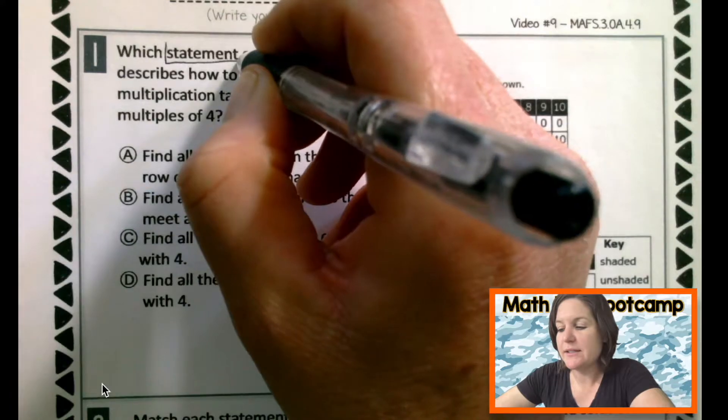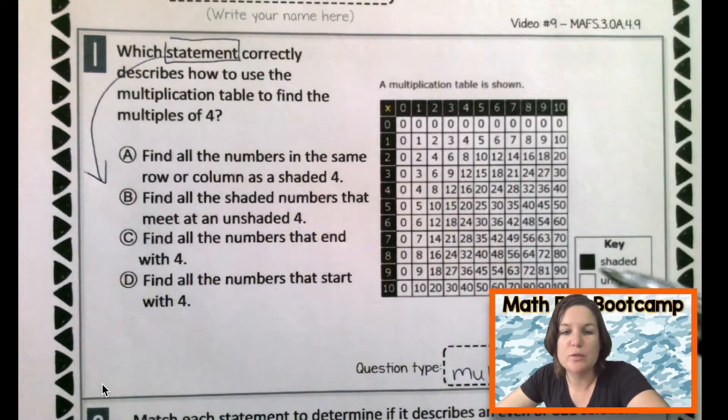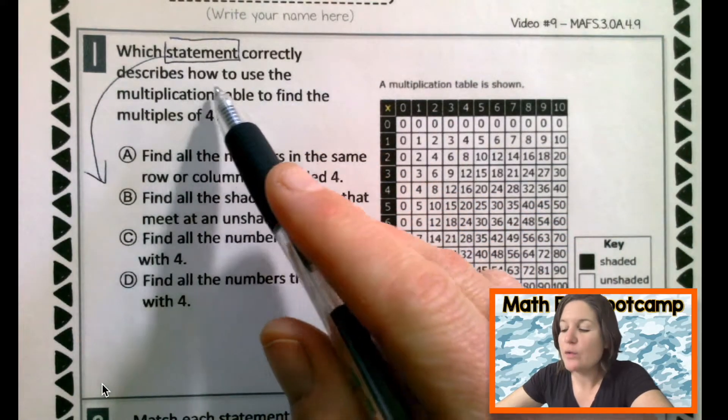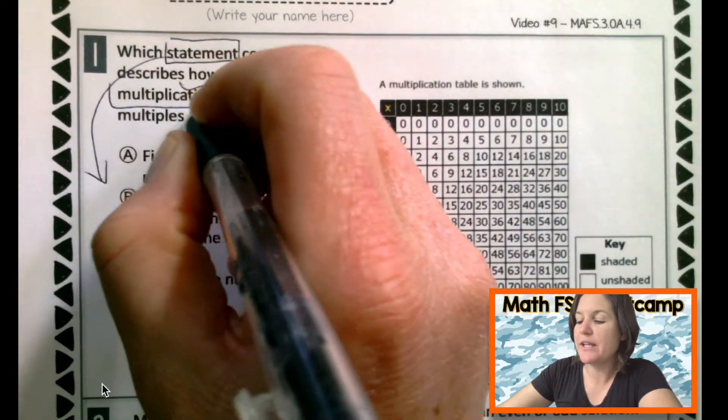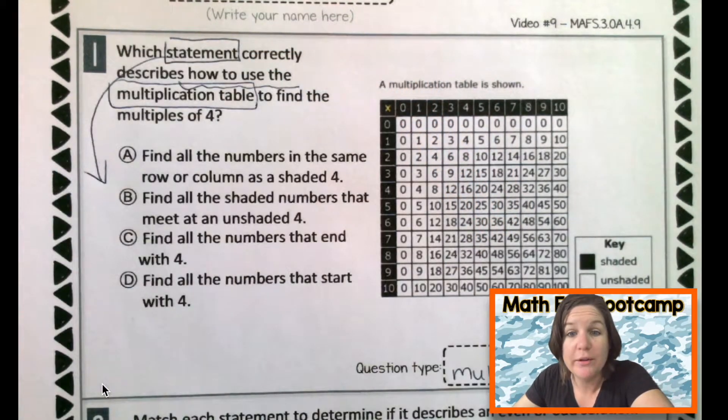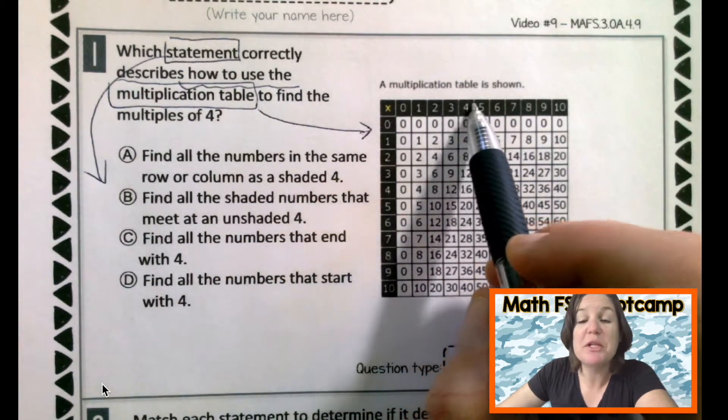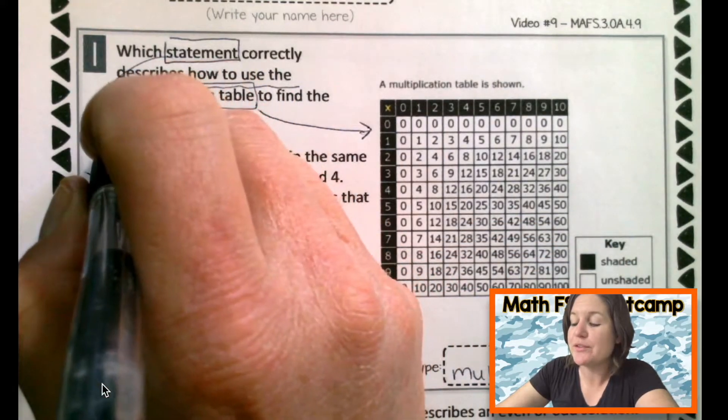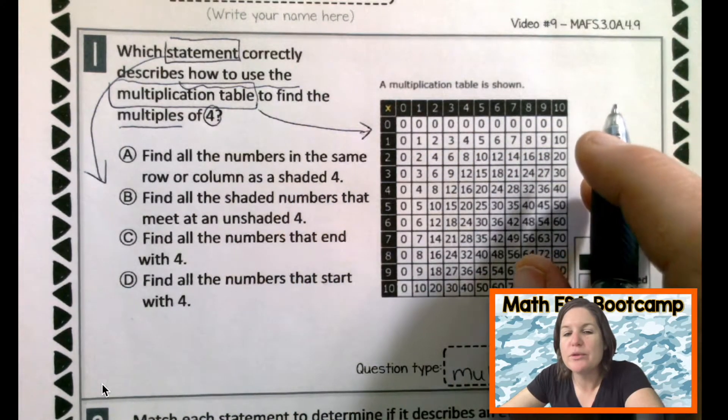So it says which statement correctly describes how to use the multiplication table to find multiples of 4. So somehow I need to use this multiplication table to help me with a question, right? That's the gist. Now let me slow down and annotate it. Let me mark up my text. Which statement, that's these down here, these are the statements, which one of those correctly describes how to use the multiplication table, where's the multiplication table? Yeah, right over here, it tells you. A multiplication table is shown. To find the multiples of 4.